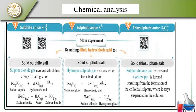Let's look at the sulfite group. Sodium sulfite with hydrochloric acid gives NaCl, water, and sulfur dioxide gas. With dilute hydrochloric acid, hydrogen sulfite gas evolves. Sodium sulfite with hydrochloric acid gives sodium chloride and hydrogen sulfite — these are the main reactions we work with.